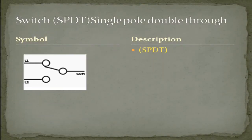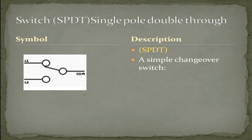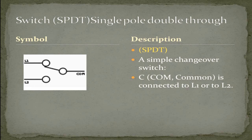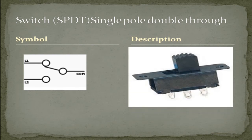A single pole, double throw switch. A simple changeover switch. C (the common) is connected to either L1 or L2. As you can tell, you have one common wire that is capable of controlling two circuits. Example: a high-low switch. In this picture, you can see a single pole, double throw switch. And you can tell by the three terminals: the one common and the two lines.